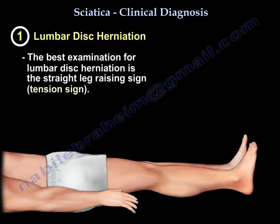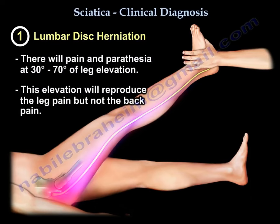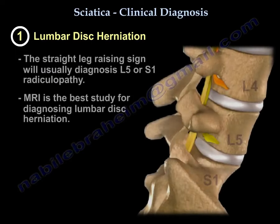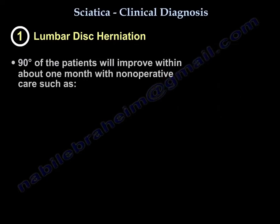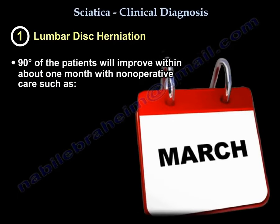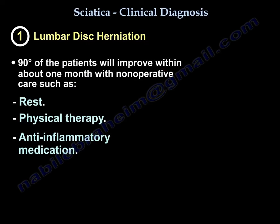The best examination for disc herniation is the straight leg raising sign, which is called the tension sign. There will be pain and paresthesia at 30 to 70 degrees of leg elevation, which reproduces leg pain but not back pain. The straight leg raise usually diagnoses L5 or S1 radiculopathy. MRI is the best study to diagnose disc herniation. Ninety percent of patients will improve within one month with non-operative care such as rest, physiotherapy, and anti-inflammatory medication.